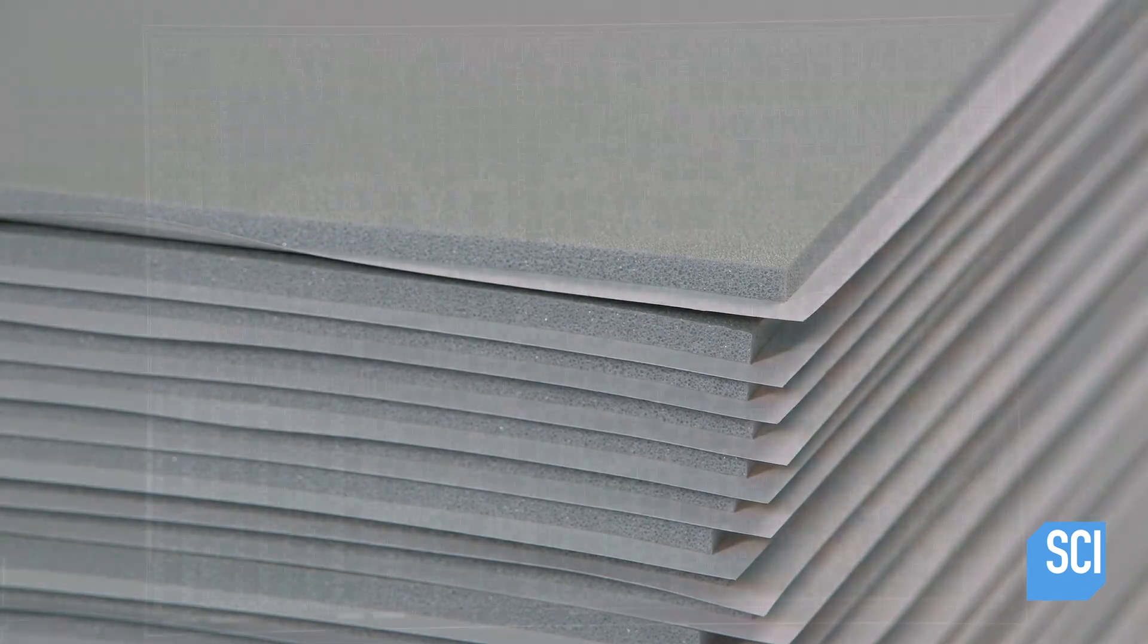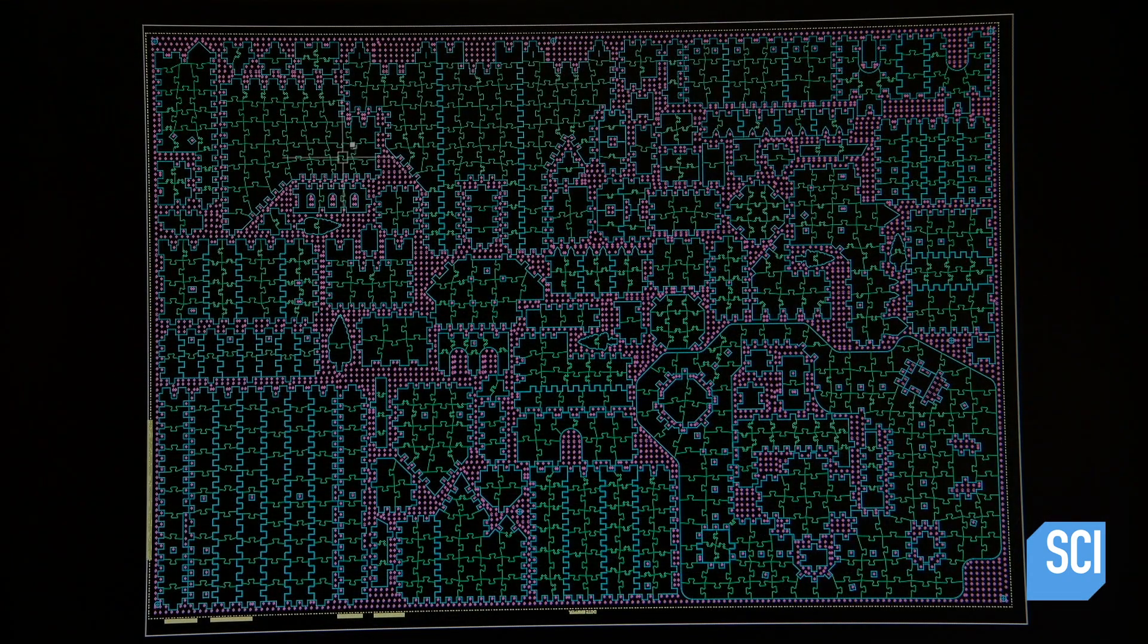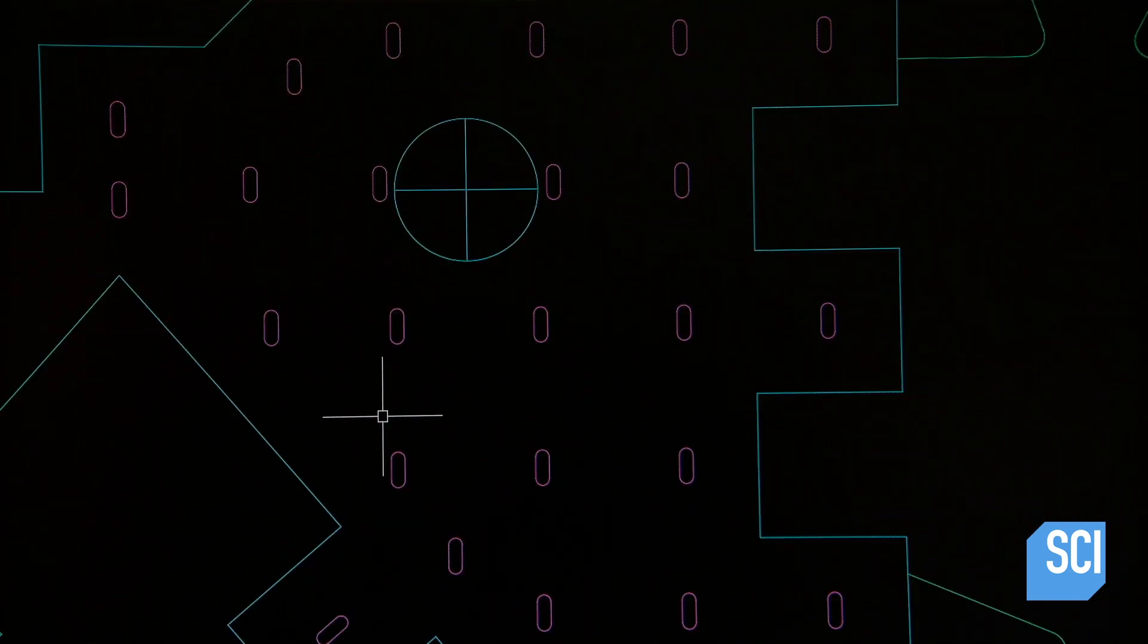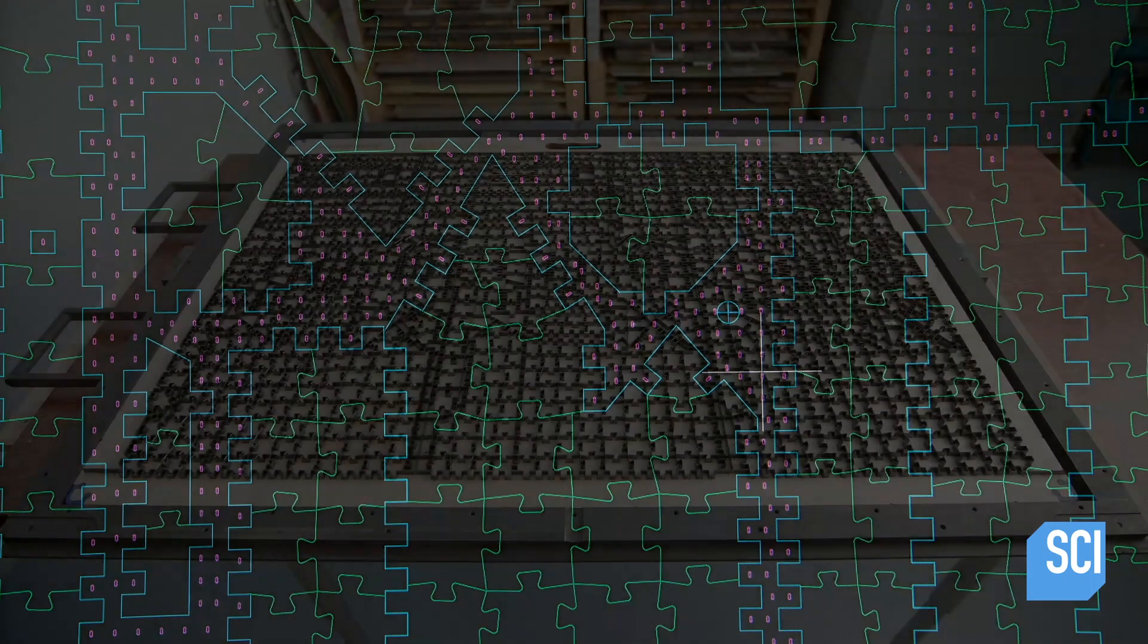In the development phase, the industrial designer assembled a blueprint for how the puzzle pieces would be shaped and laid out. That design went to a toolmaker who produced a corresponding cutting die out of steel knives.